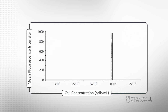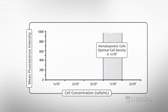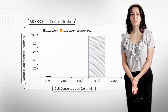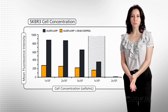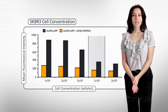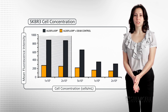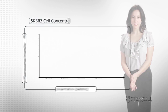The recommended cell density for detecting ALDH activity in hematopoietic cells is 1 million cells per milliliter of sample, but this may not be necessarily optimal for other cell types. For example, to detect ALDH activity in the SKBR3 mammary tumor cell line, which is known to have high ALDH expression, a cell concentration of 100,000 to 200,000 cells per milliliter resulted in the strongest fluorescence.